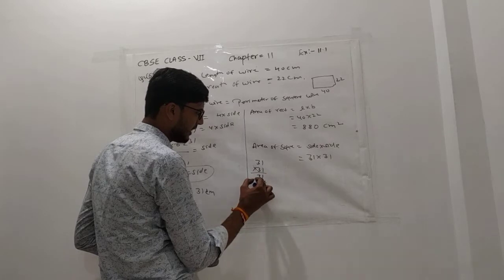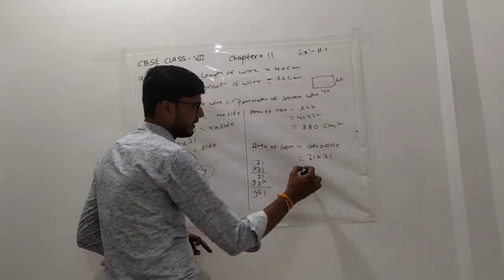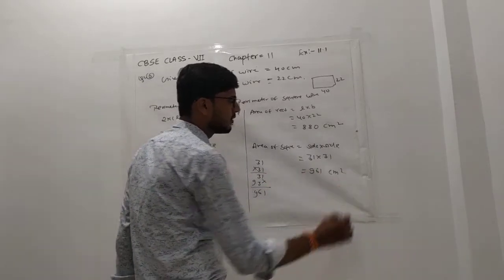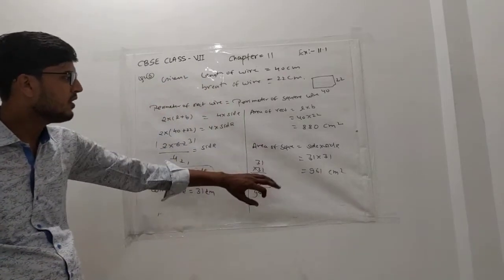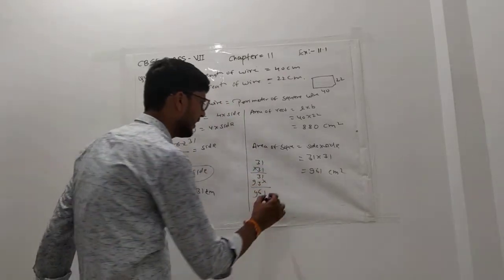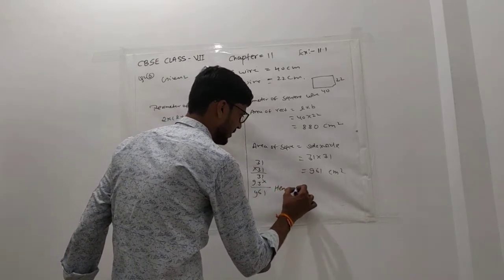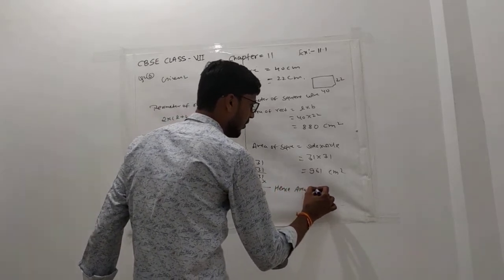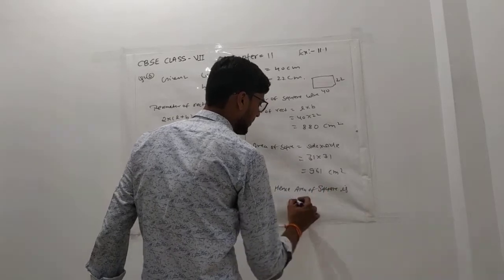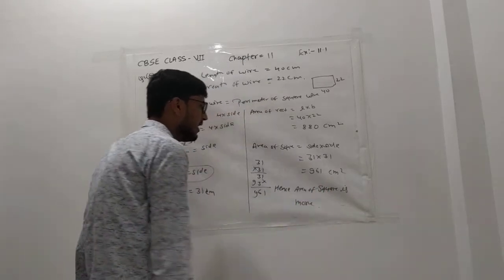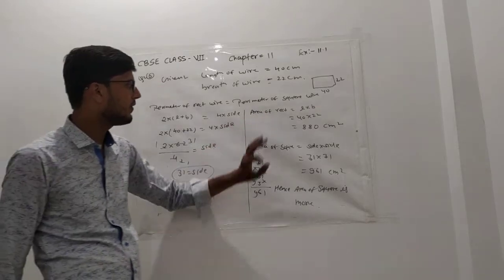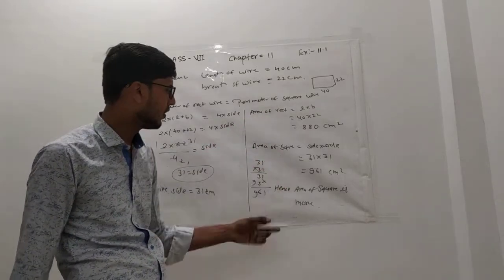Calculating 31 × 31: we get 961 cm². So the area of square is more. We write: area of square is more.